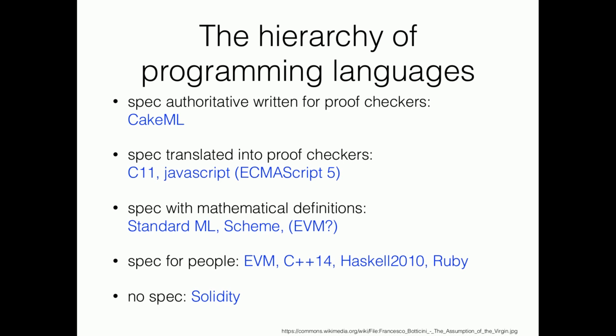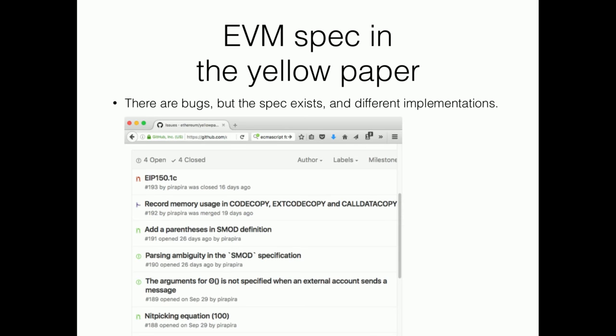There's one programming language for spec. Otter native is written for theorem provers, it's called K framework. That's the best language to prove programs on. And then there are some programming languages for spec. Specifications are translated into proof checkers, some C11, slightly old JavaScript. There are some languages with spec with mathematical definitions. Maybe they are easier to translate into proof checkers. And I found EVM a little bit, or maybe more, easier to deal with than Solidity.